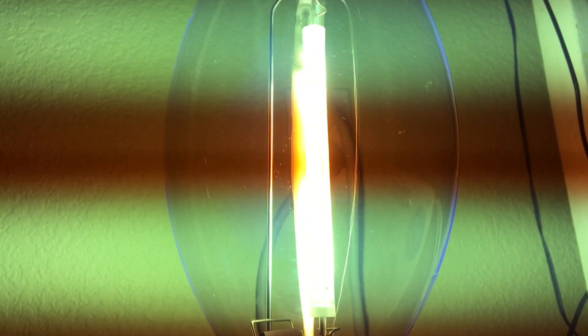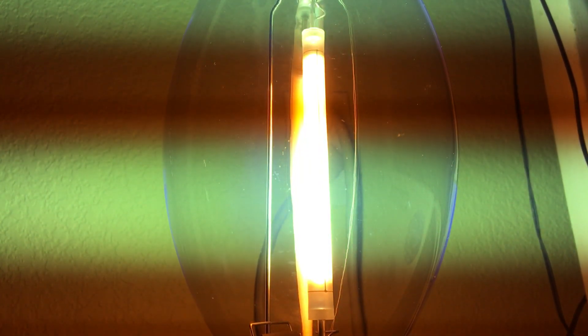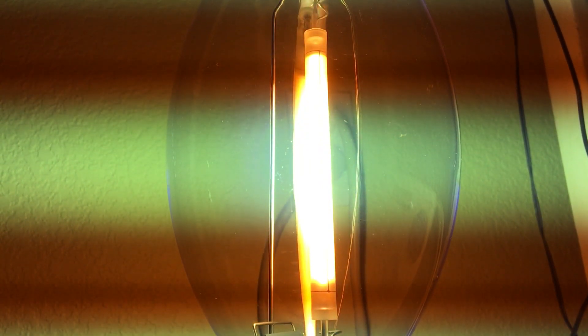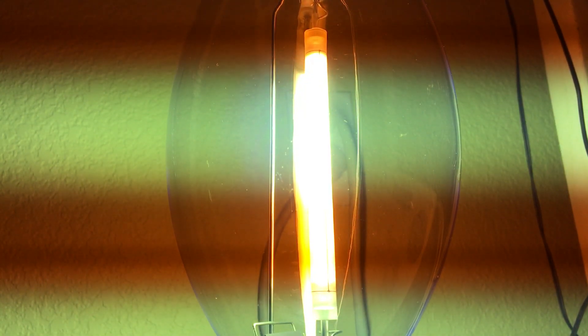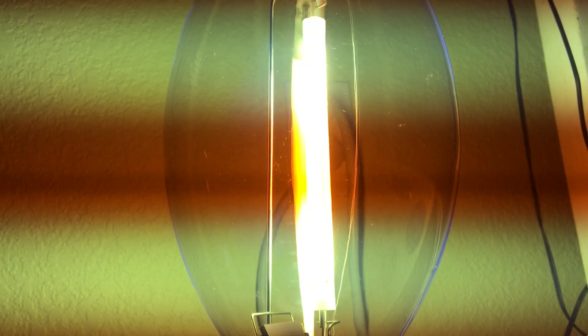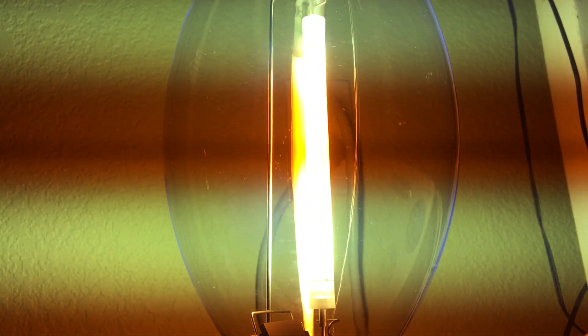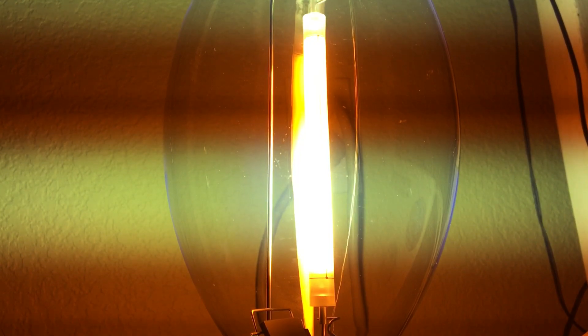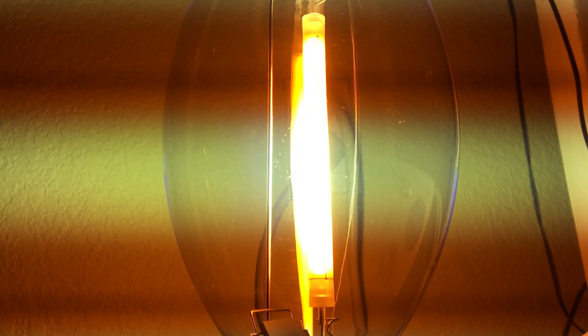This bulb is also similar to my Westinghouse Ceramilux 250-watt cycling high-pressure sodium bulb because it gives off the same colors. Except that this bulb has a glow bottle full of neon gas for the igniter. So you don't need an igniter unless you break it.